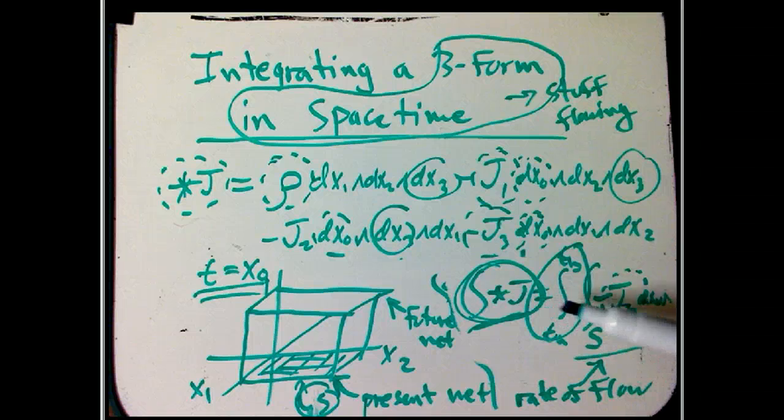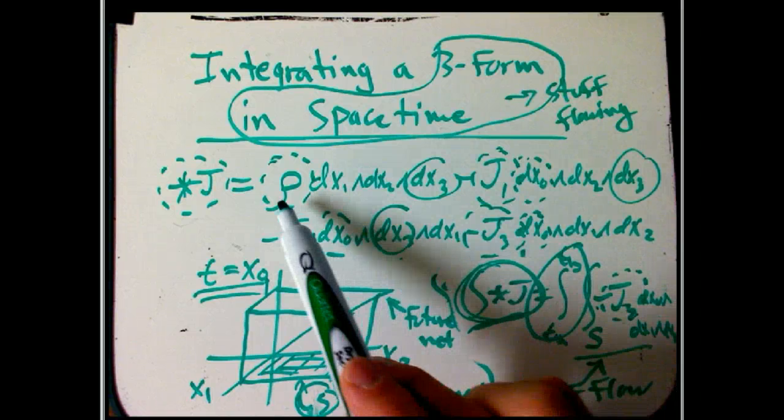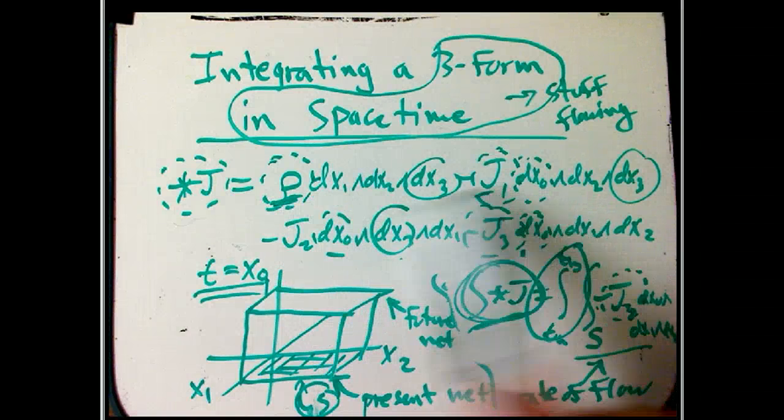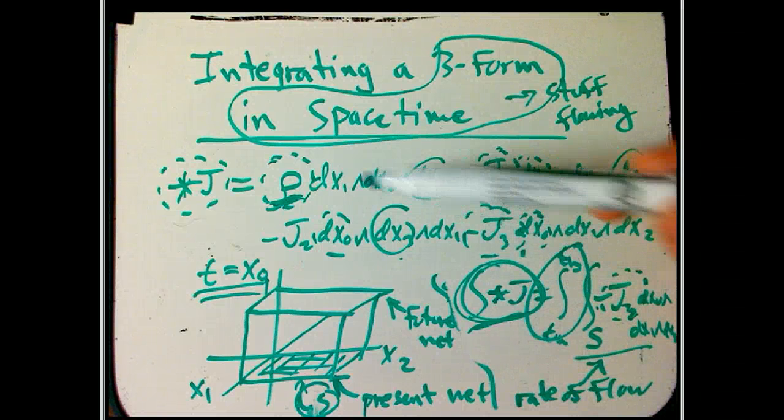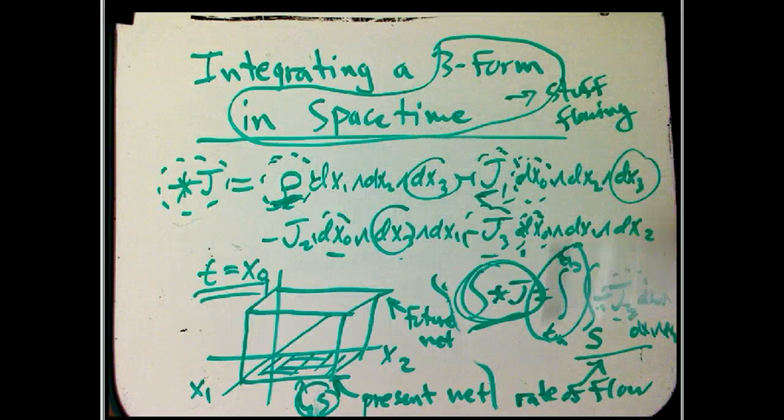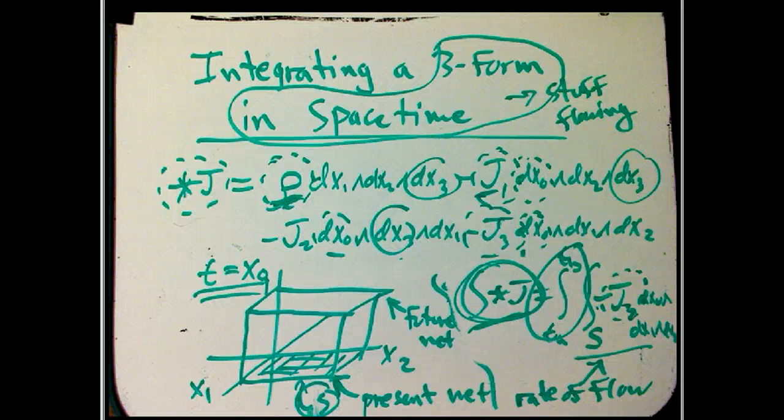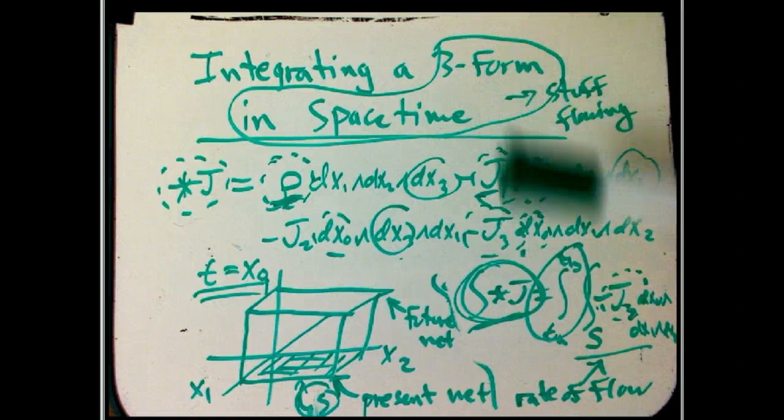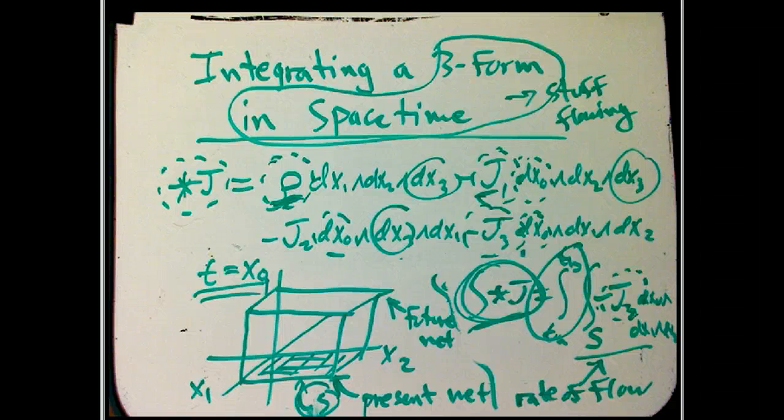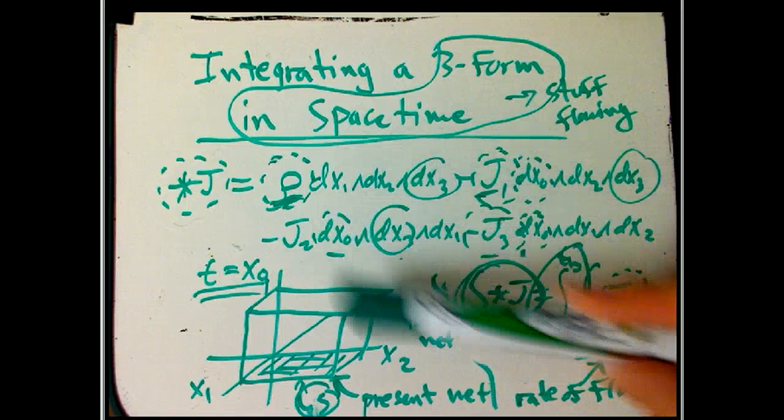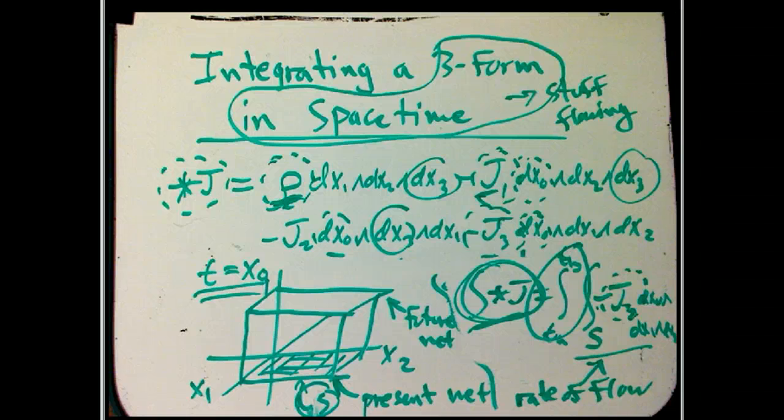When you're saying, oh, I want to translate this from infinitesimal stuff, densities of amount of charge and of current, to actual macroscopic amounts of charge and current, it's really the star j that you're integrating. So it's a really good example of how a three-form in a four-dimensional space is a very natural way of encoding something that you think about from the start of mathematical theories of flow.